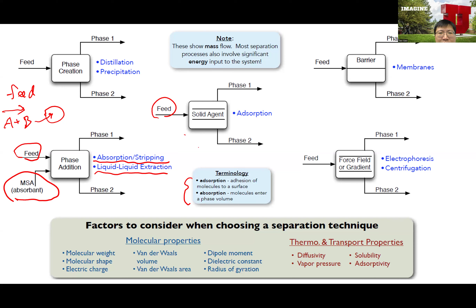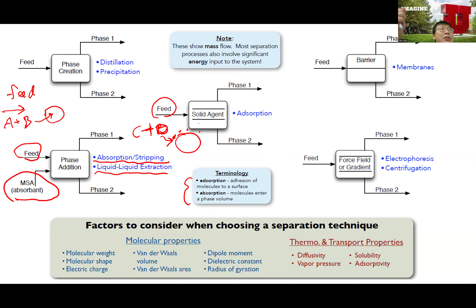So in adsorption, one component is absorbed to the surface of your particle. This is used for water filtration, especially for home use — if you have a water filter. In that filter, you typically have activated carbon, which is a type of carbon material with very high surface area. It can adsorb the organic compounds in the water and just make it taste better.